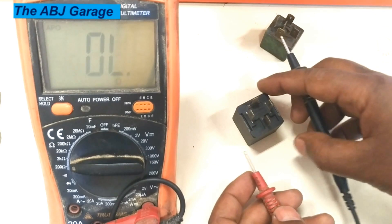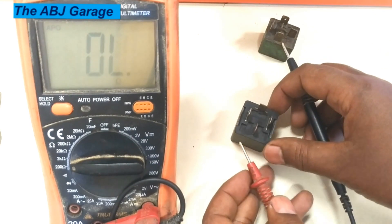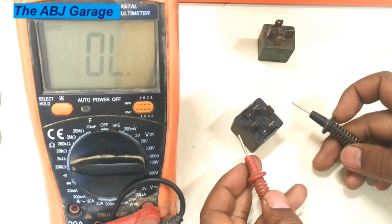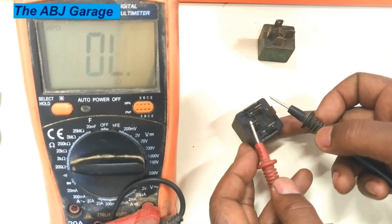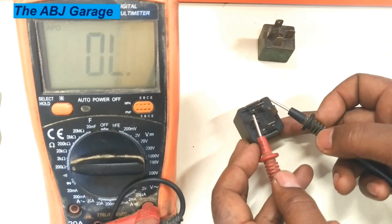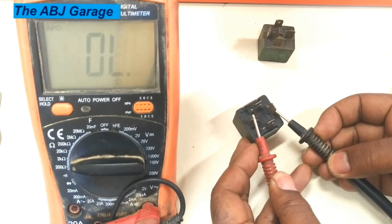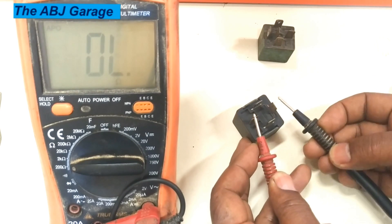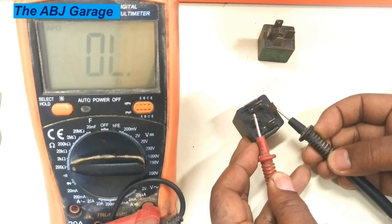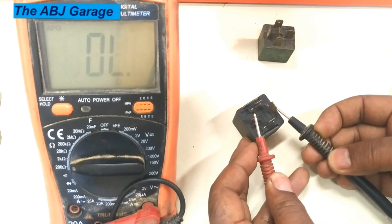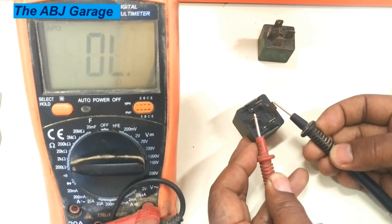Similarly, check continuity between the switch circuit terminals 87 and 30. At this point with the relay de-energized, they should read infinity resistance — an open circuit. As you can see, there is no resistance reading; it is infinity, which is correct.